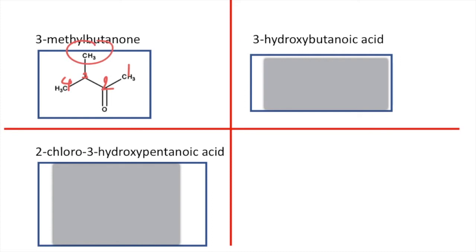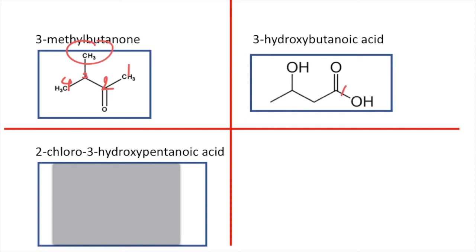Next is 3-hydroxybutanoic acid — very similar — so let's draw butanoic acid: carbon number one is where the carboxylic acid is, then two, three, and four. And on carbon number three is where your alcohol group is.